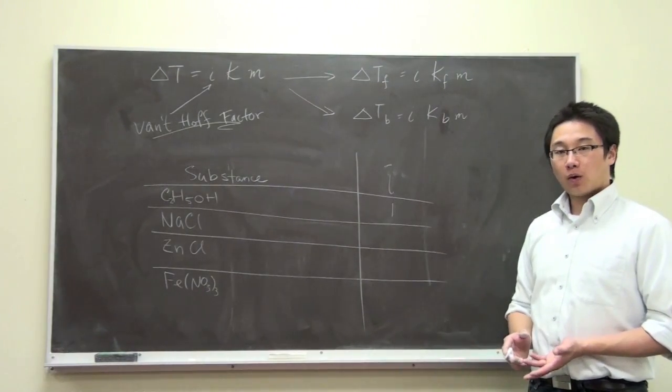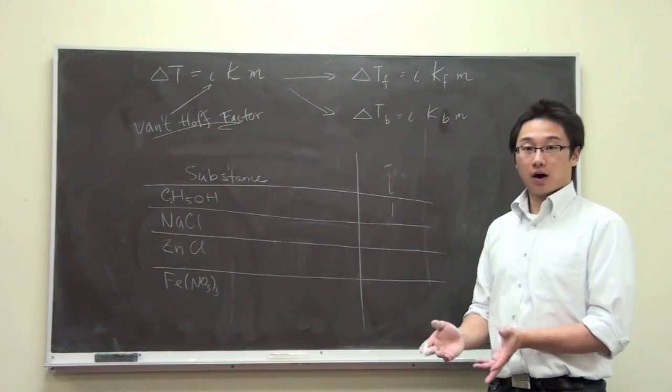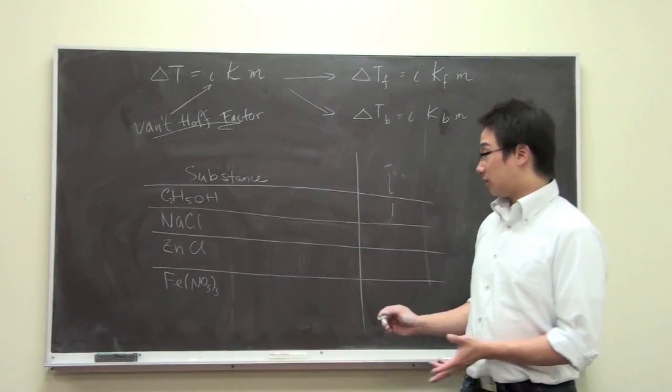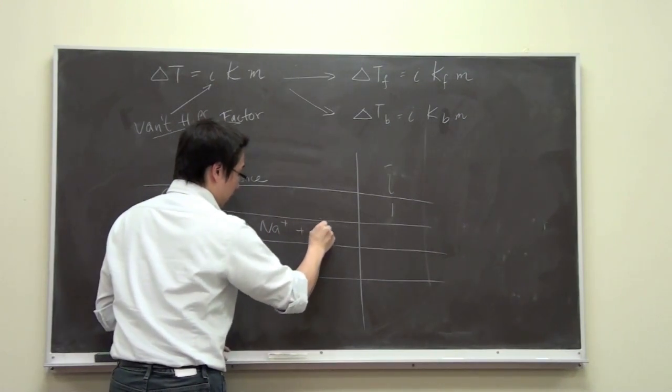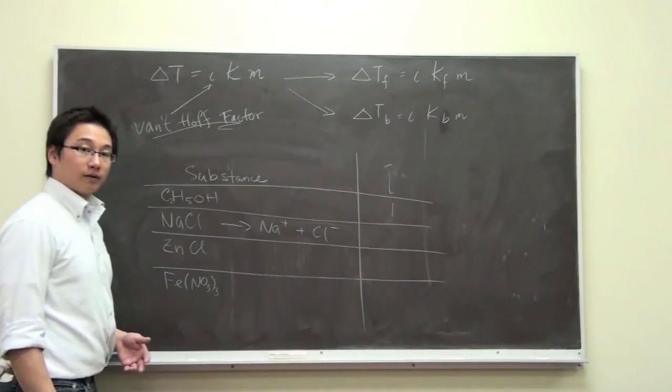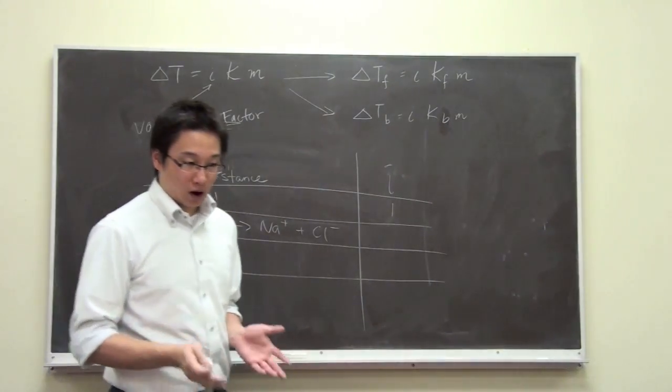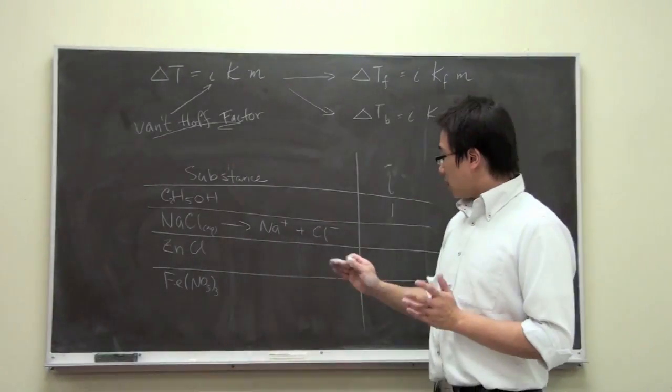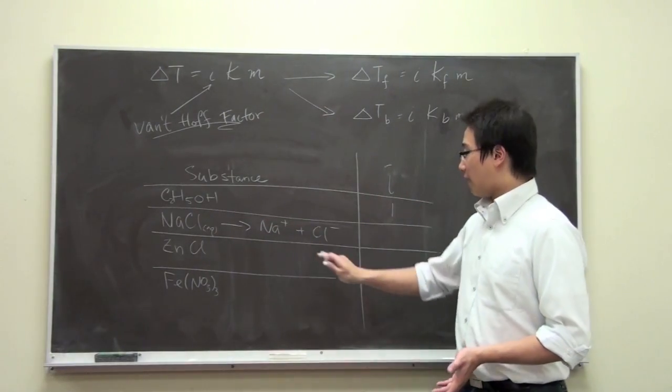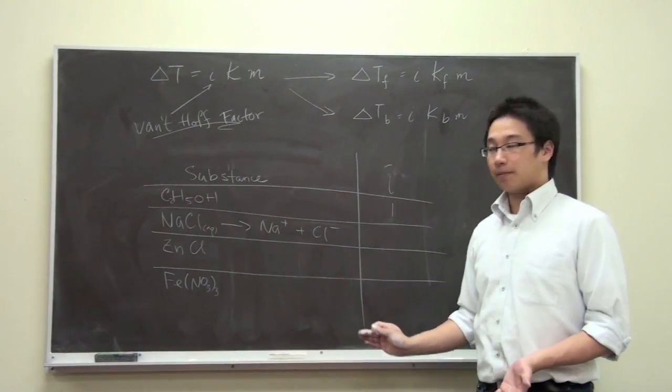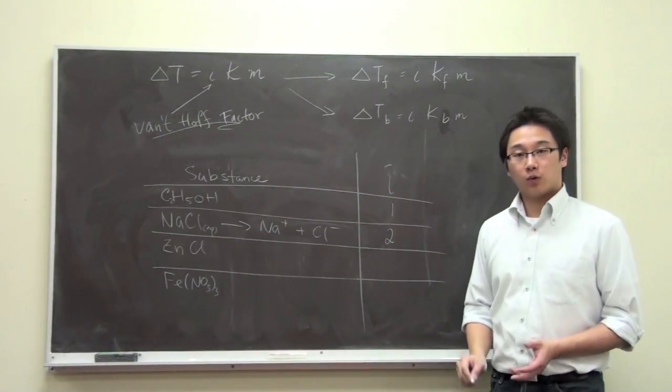If you look at sodium chloride, it is an ionic compound. When it is dissolved in water, it will dissociate into sodium ion and chloride ion. Given that it is an aqueous solution dissolved in water, for every one of the NaCl sodium chloride, we have two things broken up into two. So in this case, the Van't Hoff factor will be 2.